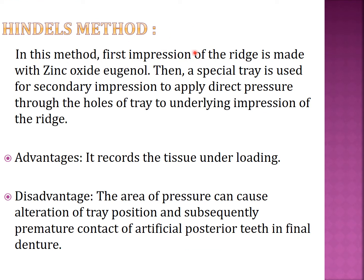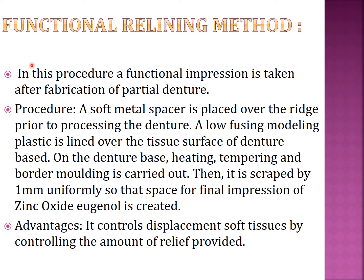Hindle's method: the first impression of the ridge is made with zinc oxide eugenol, then a special tray is used for the secondary impression to apply direct pressure through holes in the tray to the underlying impression of the ridge. The advantage is that it records the tissue under loading. The disadvantage is that the areas of pressure can cause alteration of the tray and cause premature contacts of artificial posterior teeth in the final denture.